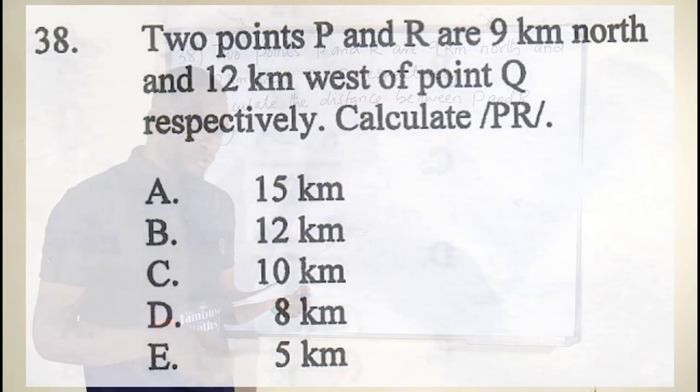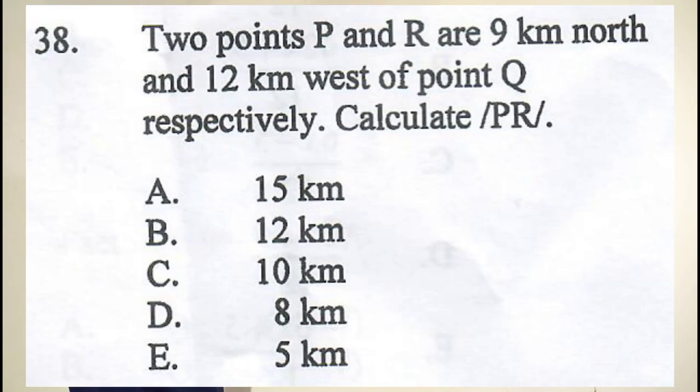Question number 38 reads: two points P and R are 9 km north and 12 km west of Q, respectively. We are asked to find the distance between P and R.